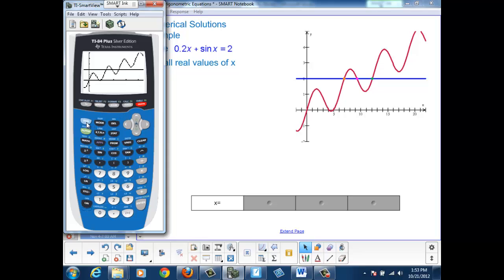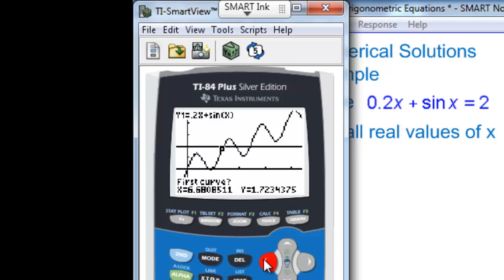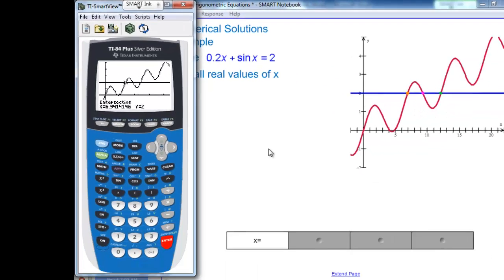To find those values, I'll use the second trace calc menu to find the intersections, number 5. My first intersection here to the left. I need to be to the left of the intersection for my first curve, and then to the right of the intersection on the line. And for my guess, I hit enter. So my first answer is 6.941.